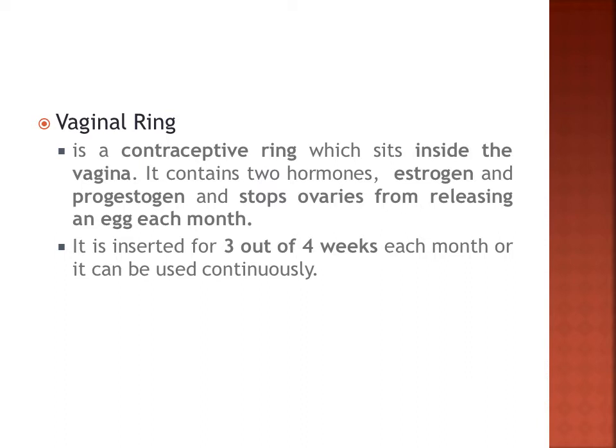The vaginal ring is inserted for three out of four weeks each month, or it can be used continuously. Hygiene is necessary, so it is better if it is changed regularly. Here in our country, vaginal rings are not very common — contraceptive pills for women are more commonly used.